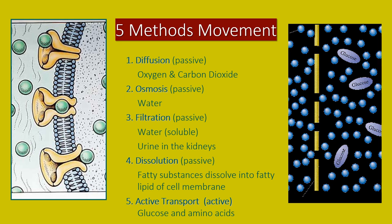Active transport, however, requires piggybacking. Glucose, which are the sugars, and amino acids, which are the proteins, they almost have a taxi through the gate of the cell wall. And this requires some energy. That's called active transport. You need to know the names of these five different methods and what travels in which way.